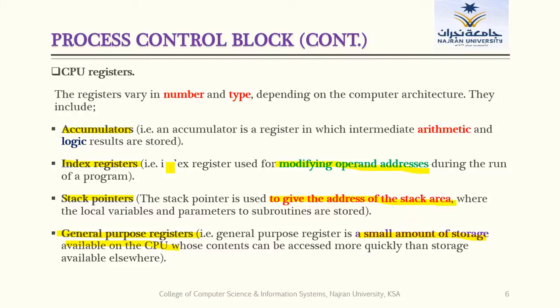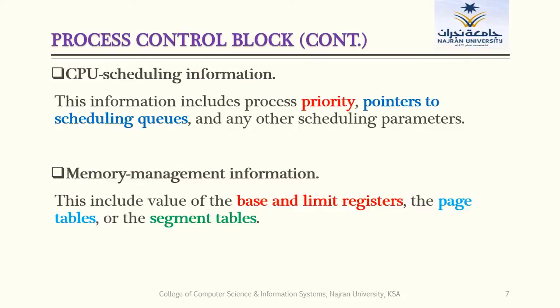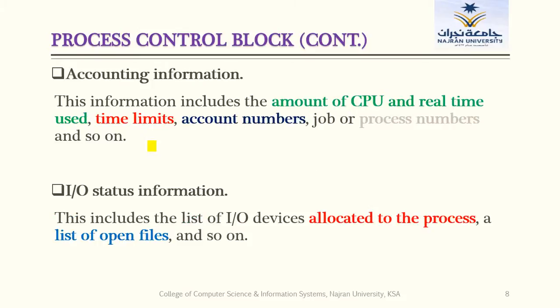CPU scheduling information includes process priority, pointers to scheduling queues, and other scheduling parameters. Memory management information includes the base and limit register, page table, and segment table. Accounting information contains all information related to accounting — such as amount of CPU and real time used, time limits, account number, and job or process number. I/O status information includes all I/O devices allocated to the process and a list of open files.